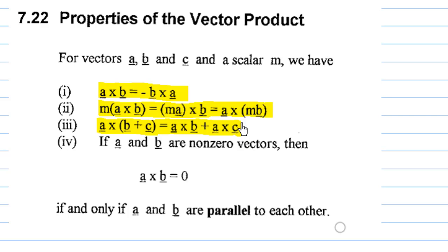And the last point is if a cross b equals zero, then a and b are parallel to each other, which we can easily understand.